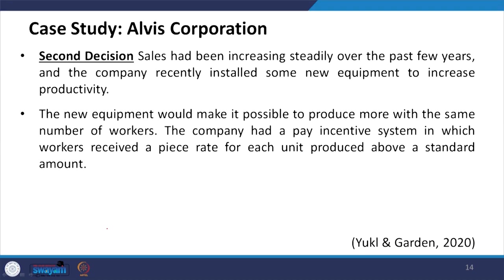For the second decision, production had been increasing steadily over the past few years and the company recently installed new equipment to increase productivity. The new equipment would make it possible to produce more with the same number of workers. In today's AI era, the same number of workers can achieve greater production.